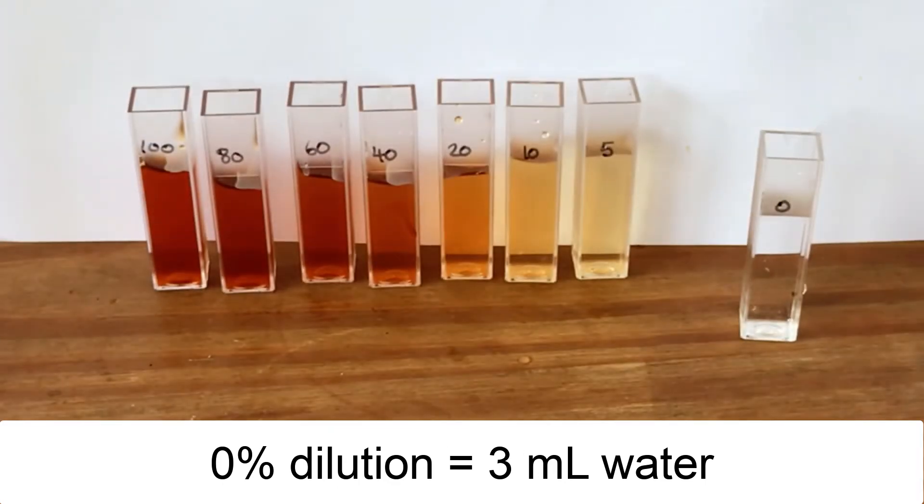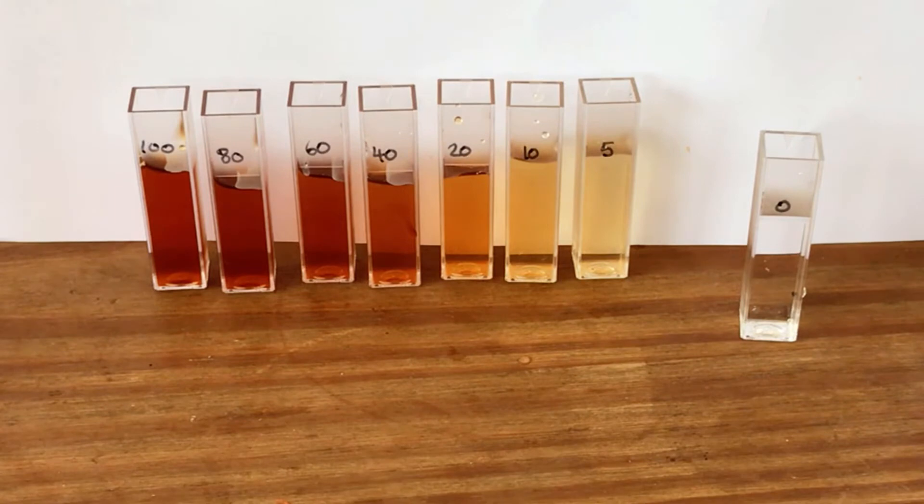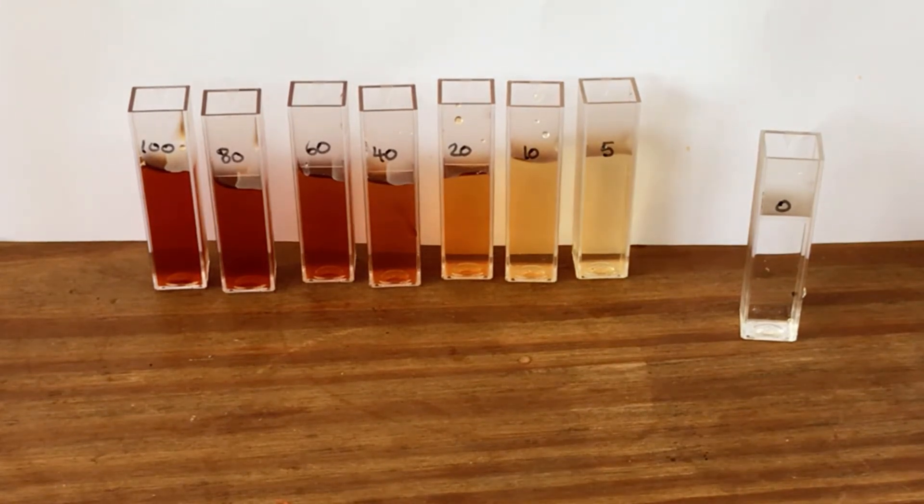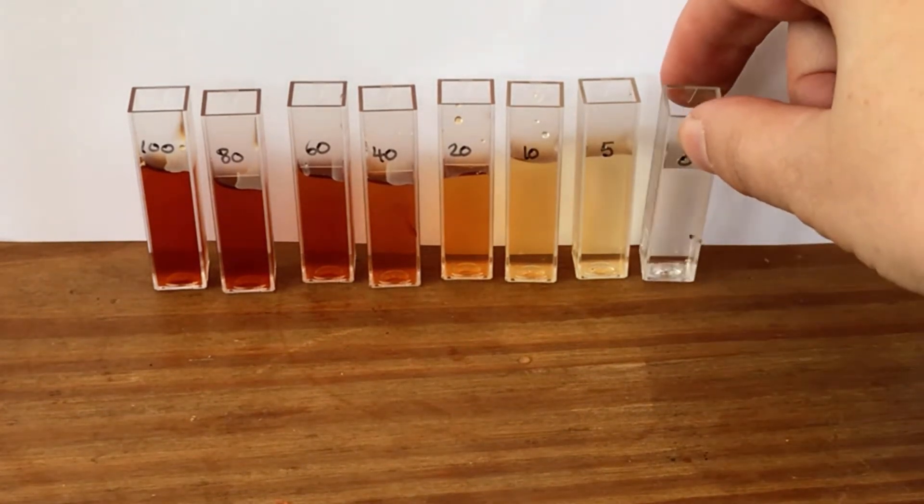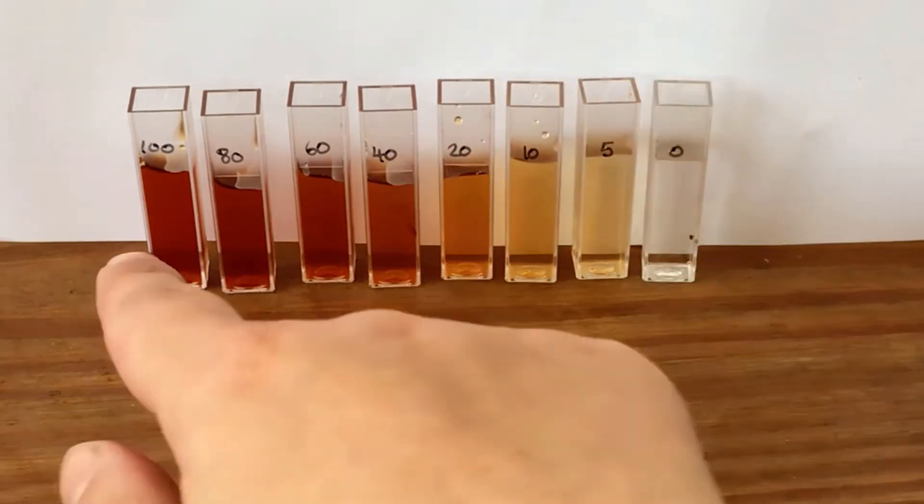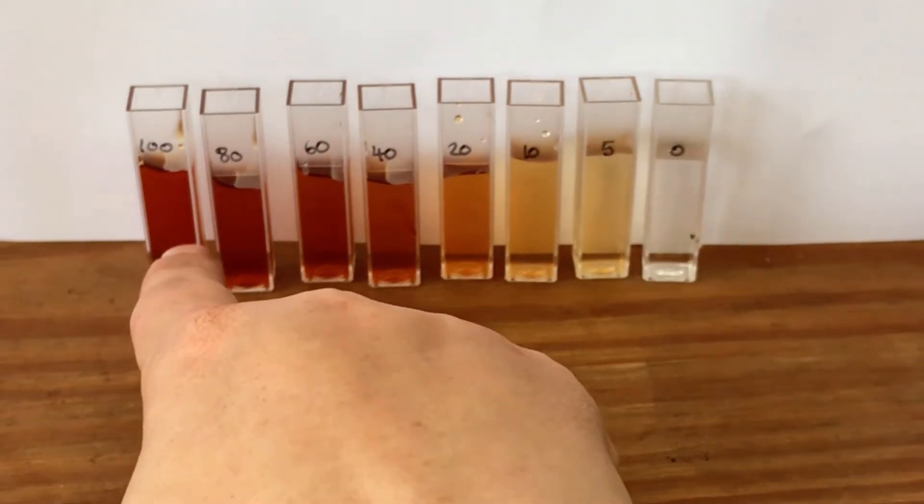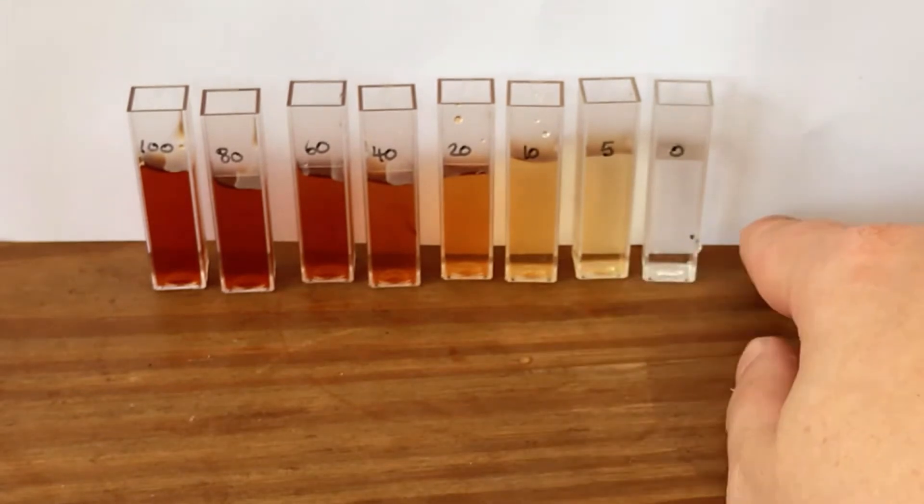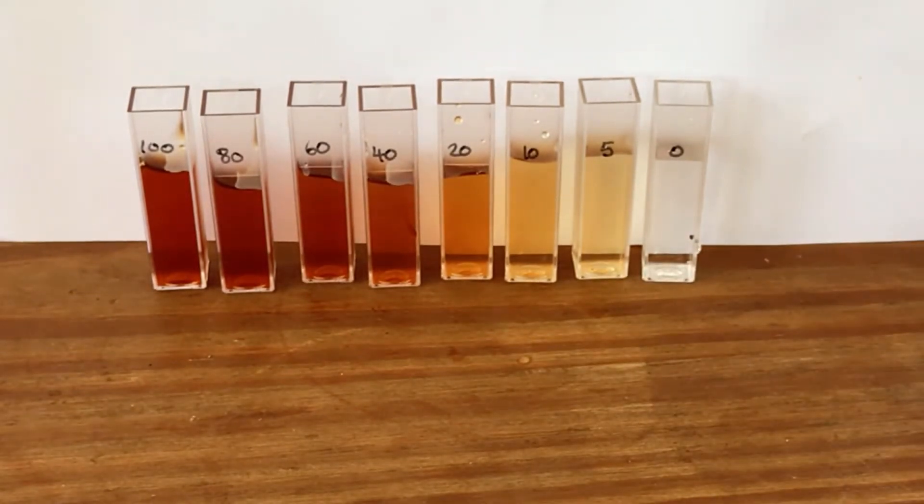So I've now got a dilution series set up of my different strength of tea. You can see we go from the most concentrated which was just the cup of tea itself, and by making up those dilutions I've now got a range of different concentrations of my tea. So I can now go and put those into the colorimeter setup and collect the data on the concentration series.